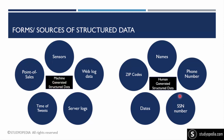Human-generated structured data includes names, phone numbers, dates, SSN numbers, and zip codes. For example, a student's name, phone number, date of joining, zip code, and student ID — the SSN number is a social security number, which you can think of as a roll number for students or an employee ID in a company database. All of these come under human-generated structured data.